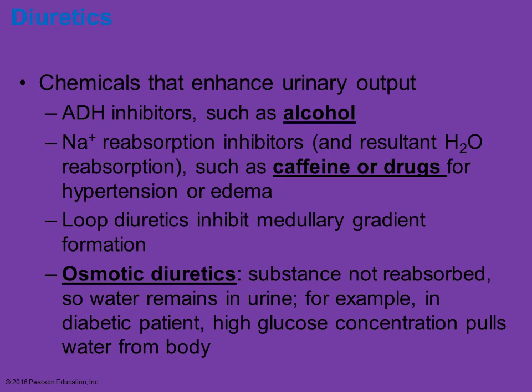In terms of what chemicals may have some influence on the production of urine — ADH, your antidiuretic hormone, helps increase water reabsorption, so you have less water in the urine. Something that inhibits that hormone is alcohol, which is one of the reasons why if you drink excessive amounts of alcohol, you have to urinate frequently — the water is being retained in the urine rather than reabsorbed, so you have to release it.